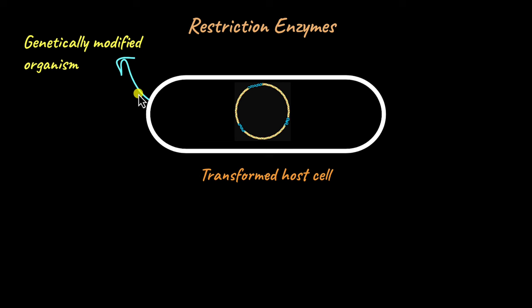When this bacterium, this E. coli, is going to divide and produce proteins, it's going to produce the foreign proteins as well. Now that we've learned about an example of where restriction enzymes are used, let's talk about some examples of restriction enzymes themselves.